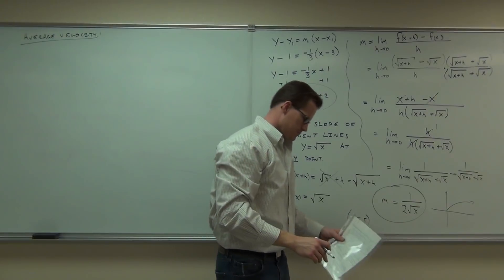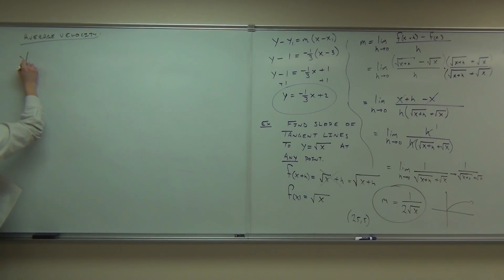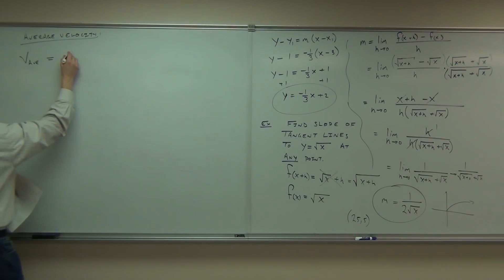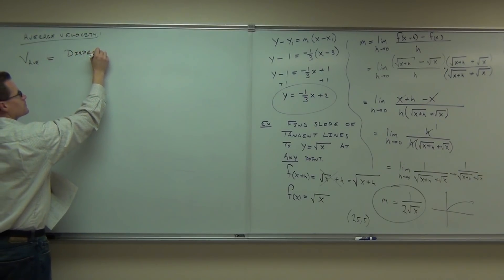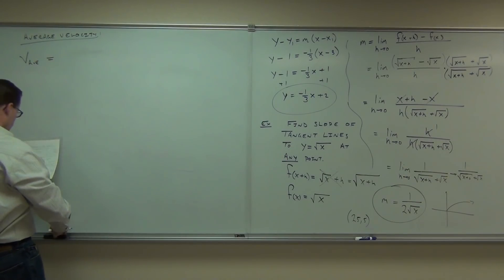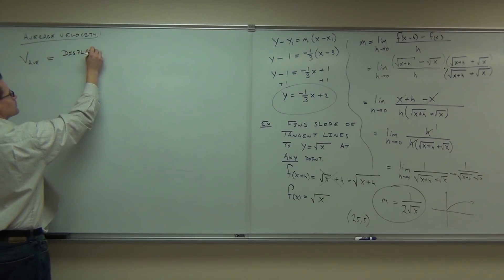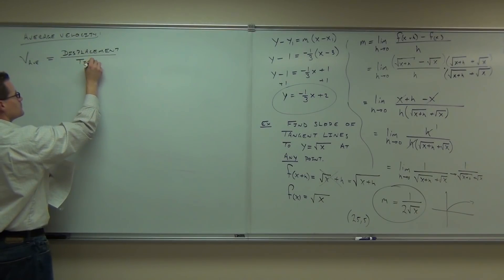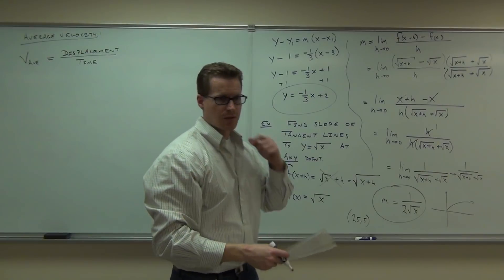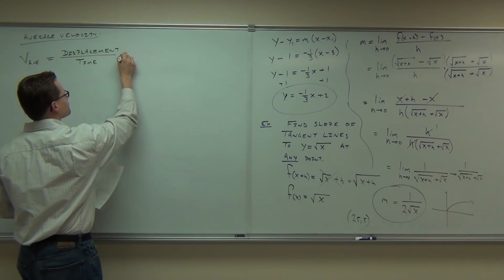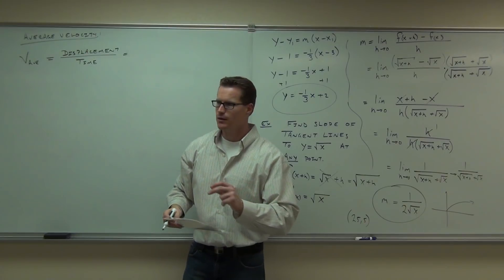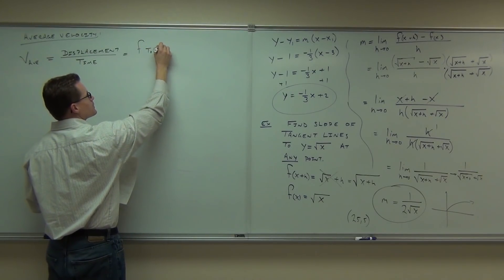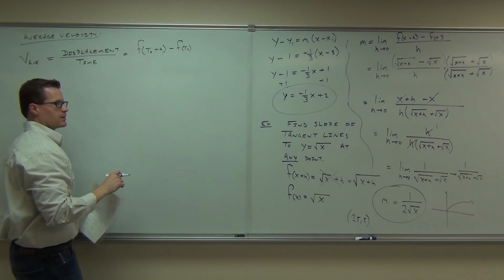Average velocity — all average velocity is, is how far you've gone over how long it took you to get there. That's exactly what this formula says: f(t₀ + h) minus f(t₀). That's how far you've gone.